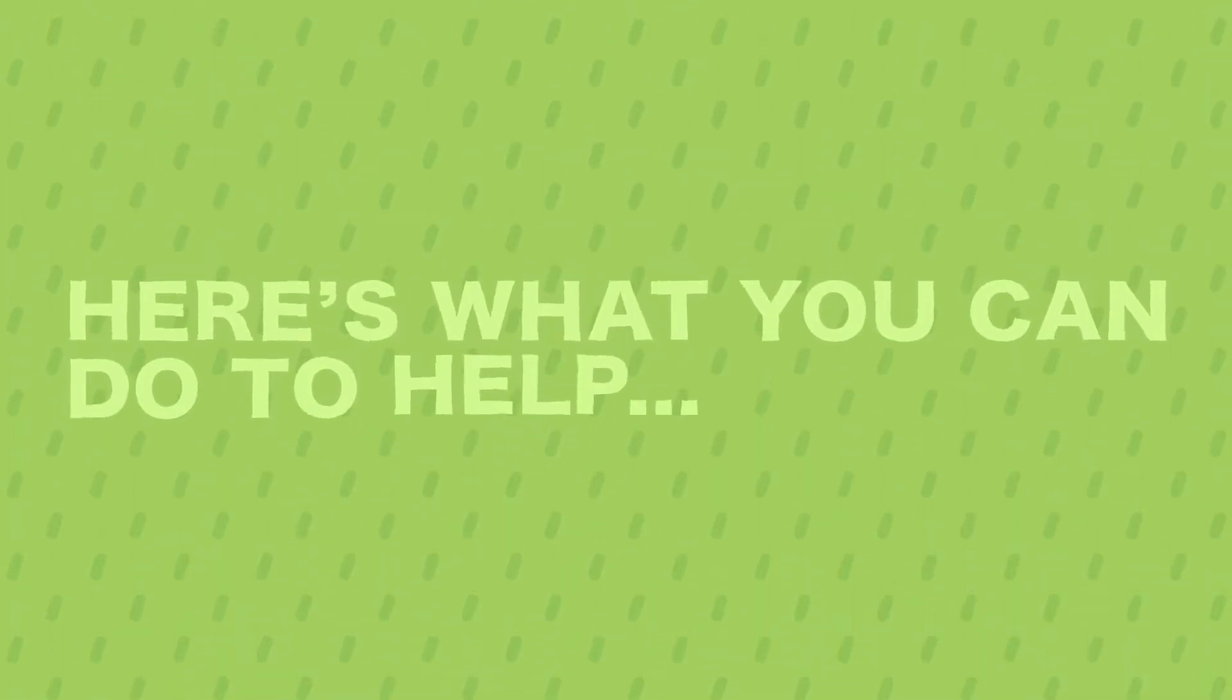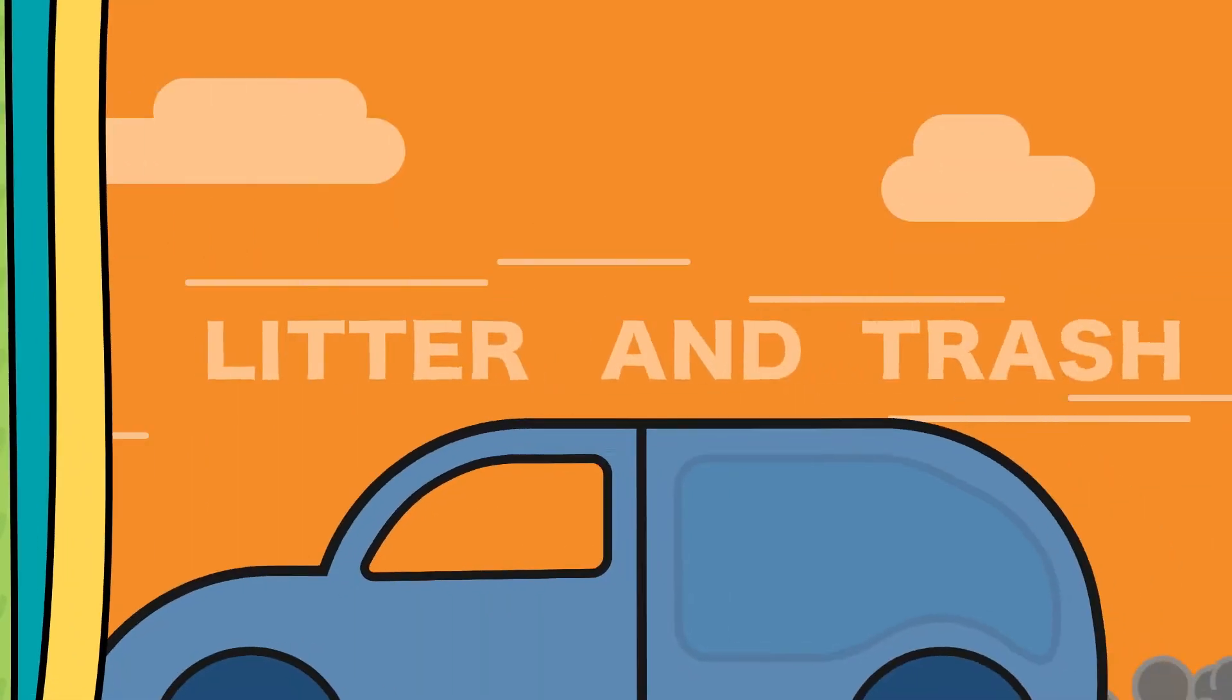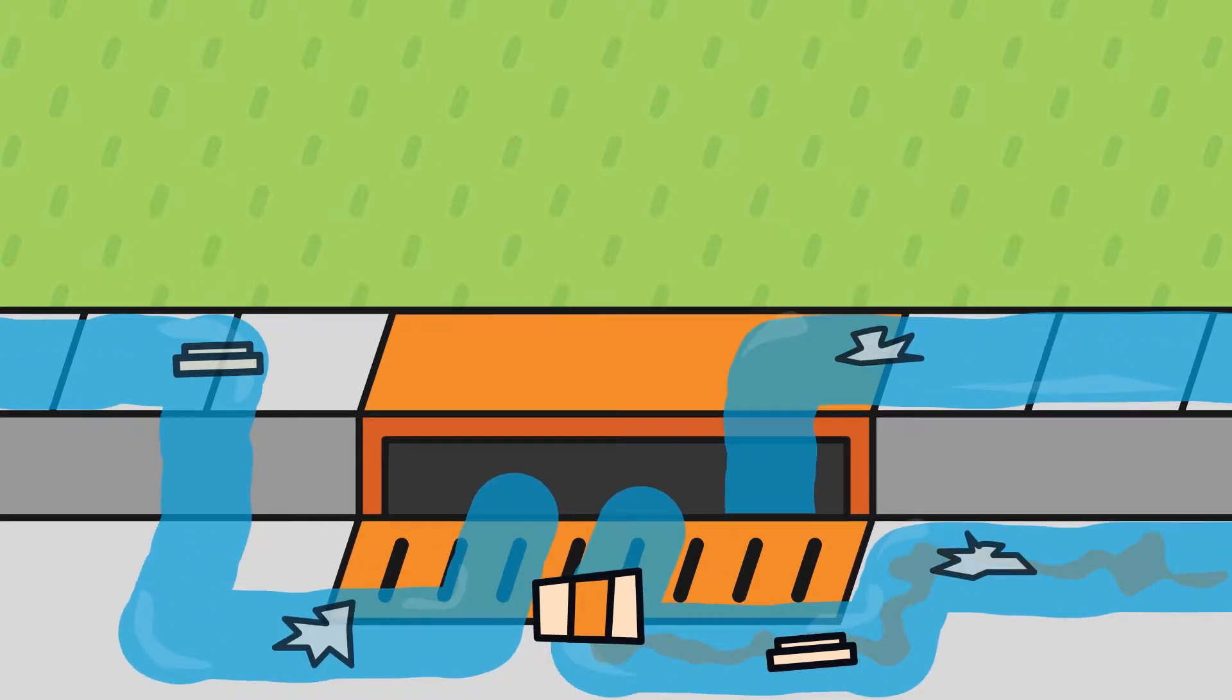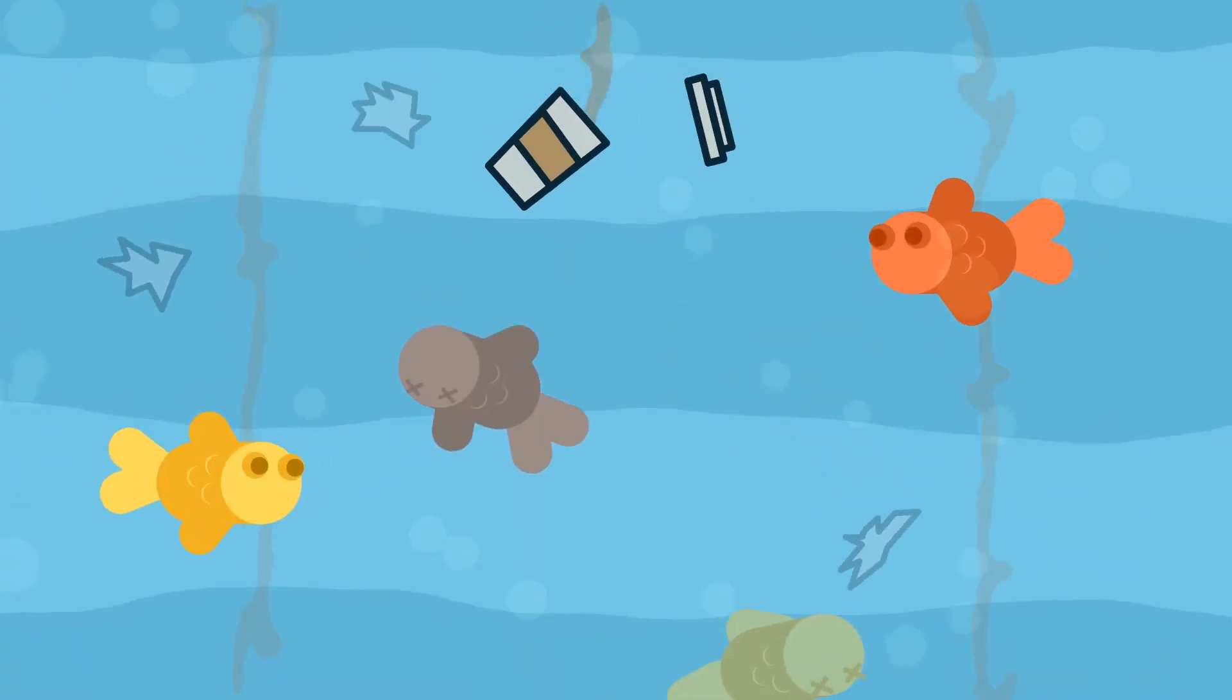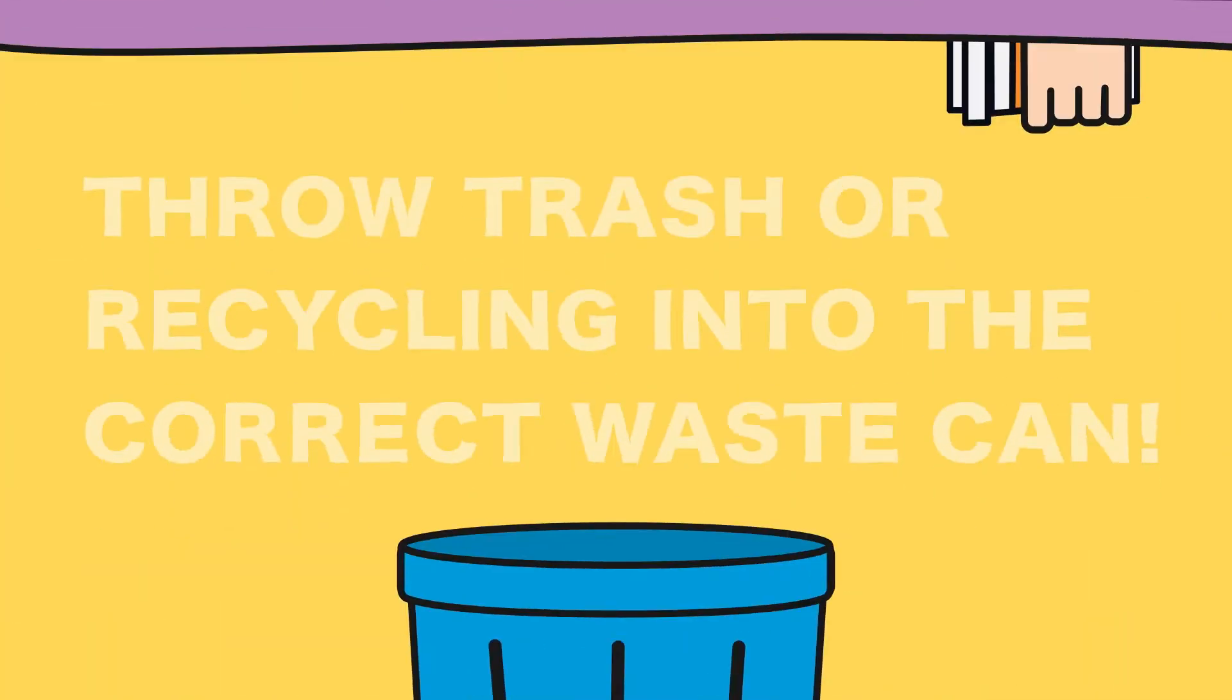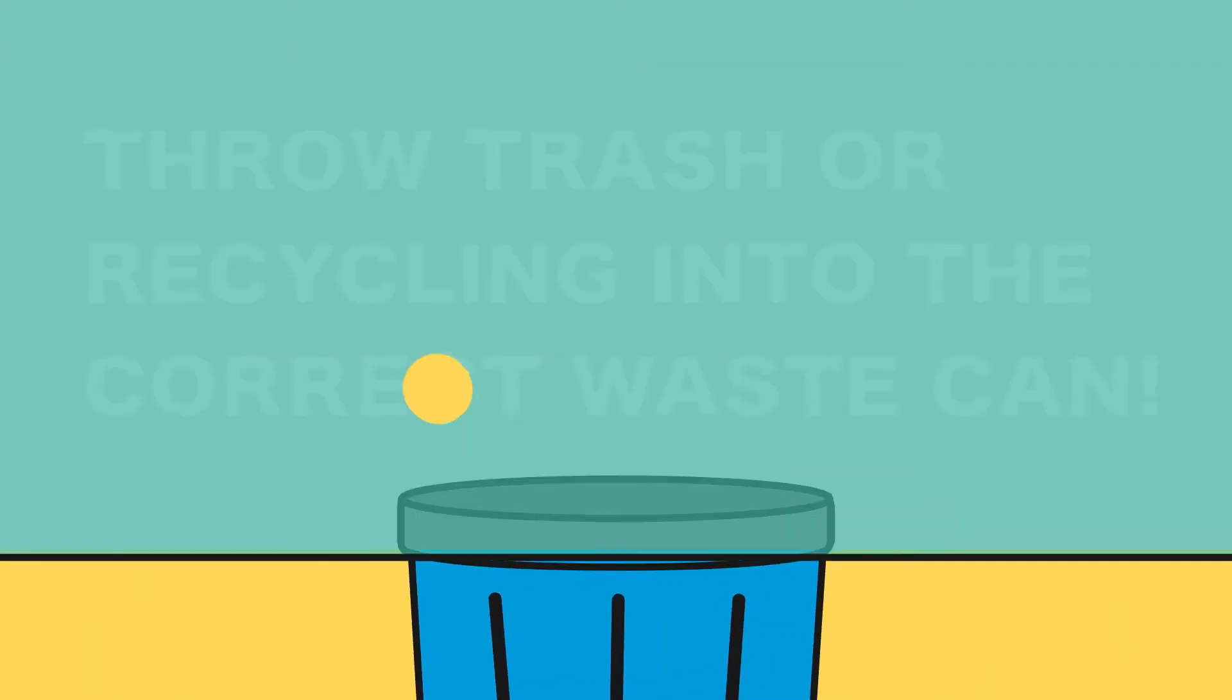Here are some things we can all do to stop stormwater pollution. Litter and trash that aren't disposed of properly can injure, choke, or kill ducks, fish, turtles, and other animals and make our environment look bad. Always throw your trash or recycling into the correct waste can.